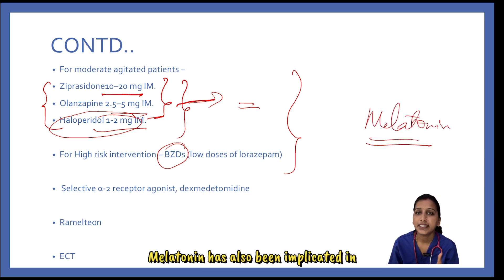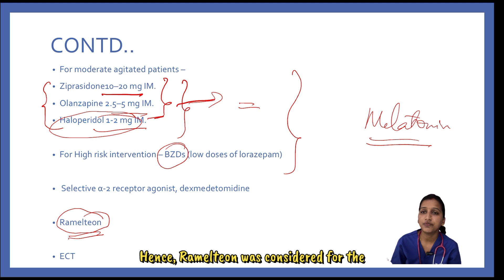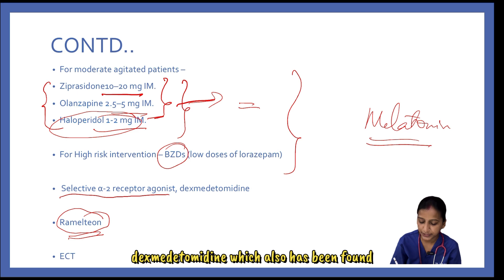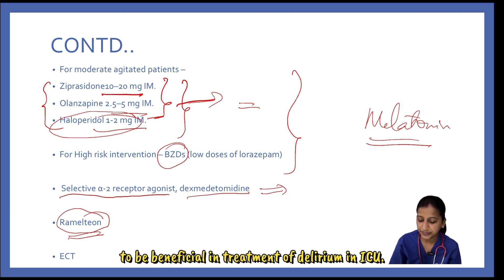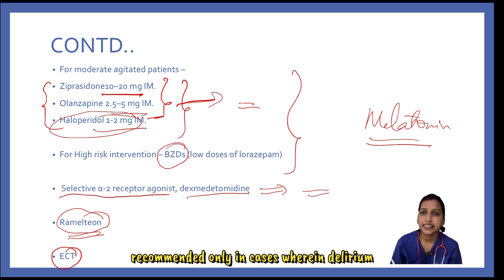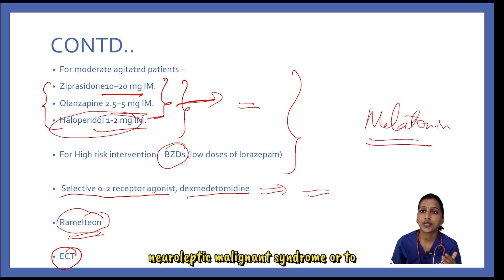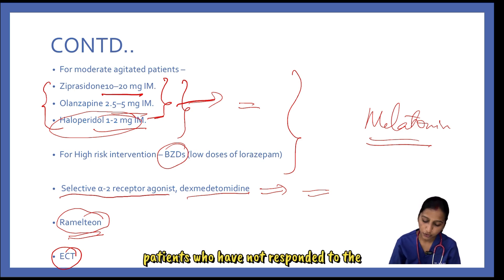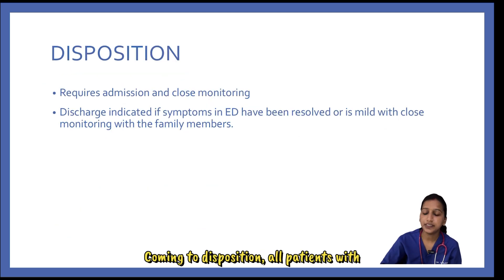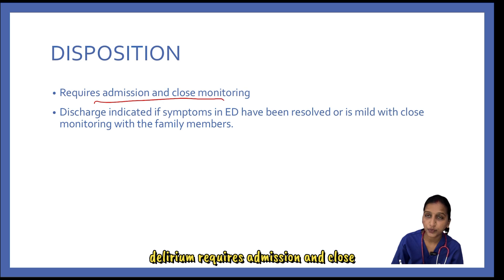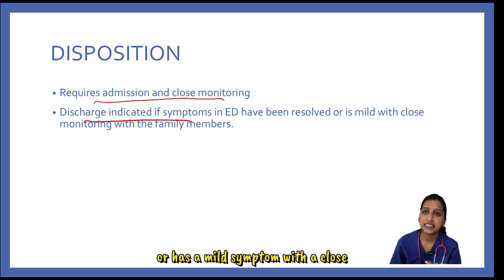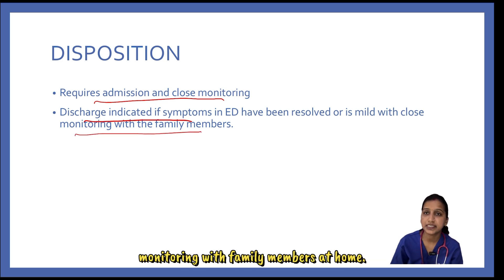Melatonin has been implicated in the etiopathogenesis of delirium; hence, ramelteon was considered for its treatment. Dexmedetomidine, a selective alpha-2 receptor agonist, has also been found beneficial in treatment of delirium in ICU. ECT is recommended only in cases where delirium is associated with neuroleptic malignant syndrome or in patients who have not responded to pharmacological agents. Regarding disposition, all patients with delirium require admission and close monitoring from the emergency department. Discharge is indicated only if the patient's symptoms are resolved in ED or there is mild symptom with close monitoring by family members at home.